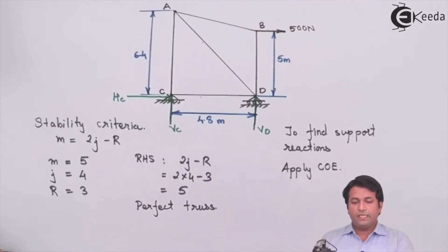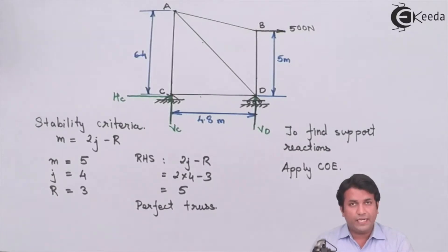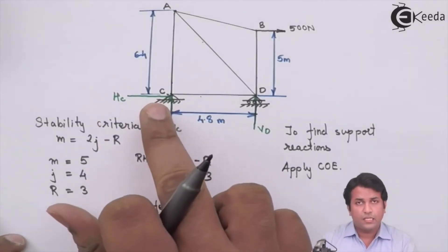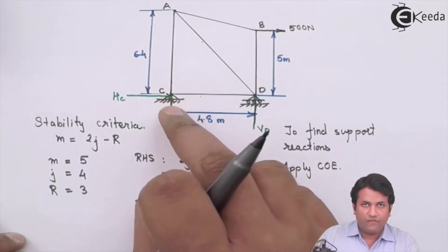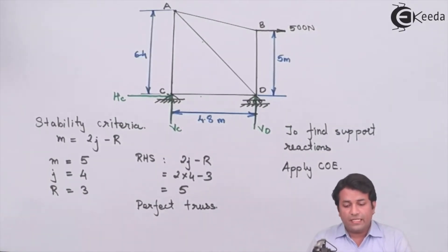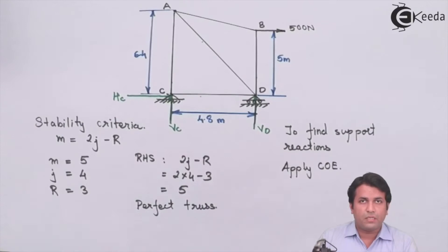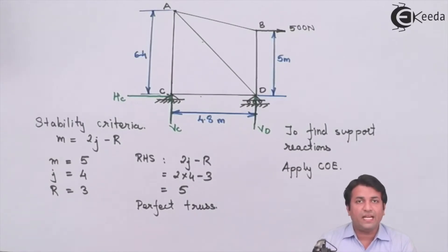Looking at the example, I need to identify whether I can apply a special case. At joint C, there are four collinear forces: HC and the force in member CD are collinear, and VC and the force in member AC are collinear. So by observation, the force in member CD equals HC and the force in member AC equals the vertical reaction VC.